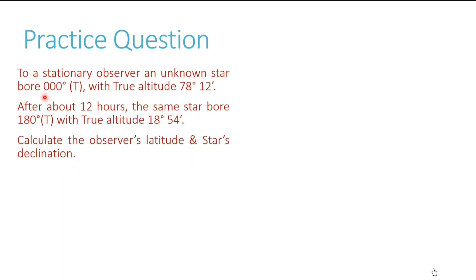You observe in this question that the star is bearing 000 at a particular time, and after about 12 hours it is again bearing 180. So at one time it was north, at another time it was south. This is only possible in the case of a circumpolar body. Otherwise, for bodies which are not circumpolar, they come north or south of the observer only once in 24 hours.